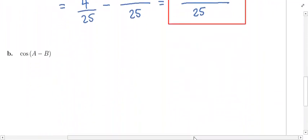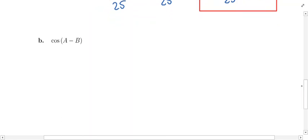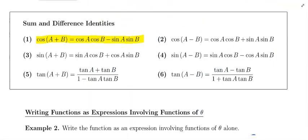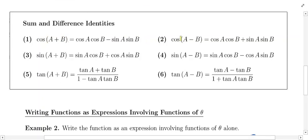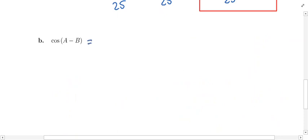That was part A. Let's move on to part B — it's very similar. This time we have the cosine of A minus B instead of A plus B, so all we do is change the formula. We use the difference formula for cosine — formula number two. The cosine of A minus B equals the cosine of A times the cosine of B plus the sine of A times the sine of B.